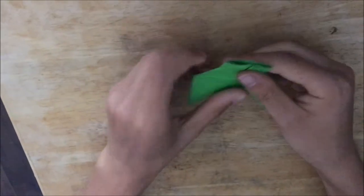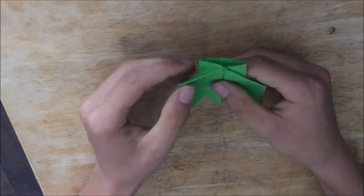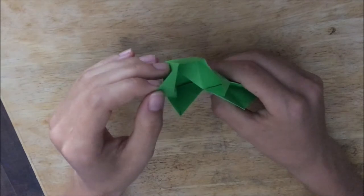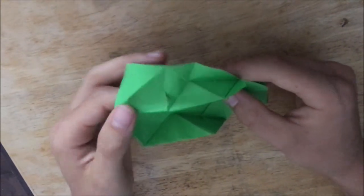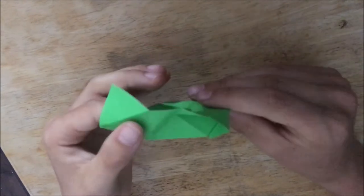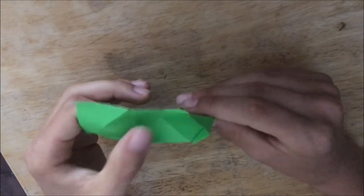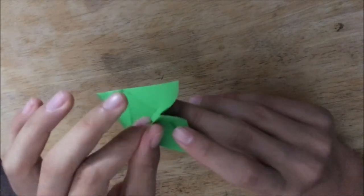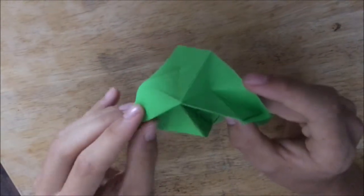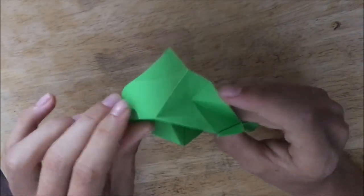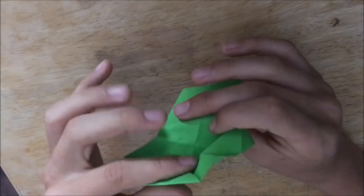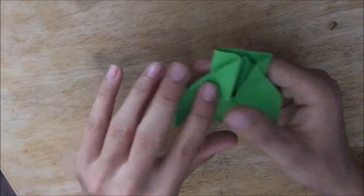And then do the same thing on the other side. So open it up, push towards you, crease this. That's already creased. Crease this part, fold this flap down, and push everything down.